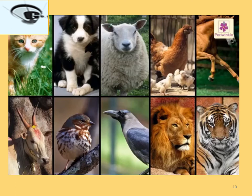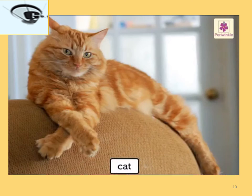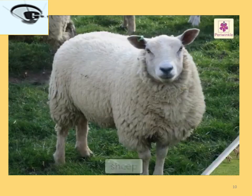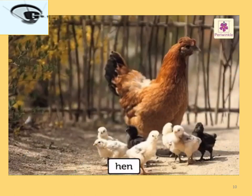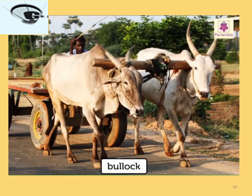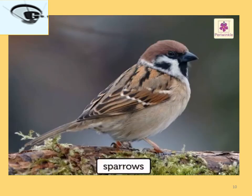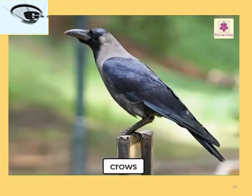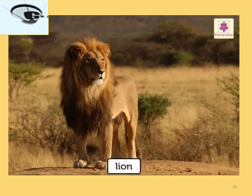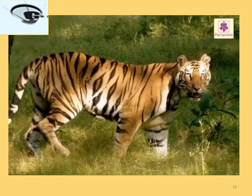We see so many animals around us. We see animals in our houses like dogs and cats. We see animals on the farm like sheep and hen. We see animals on the road like horses and bullocks. We also see birds on trees and in the sky like sparrows and crows. Animals like lion and tiger are seen in the wild and in the zoo.